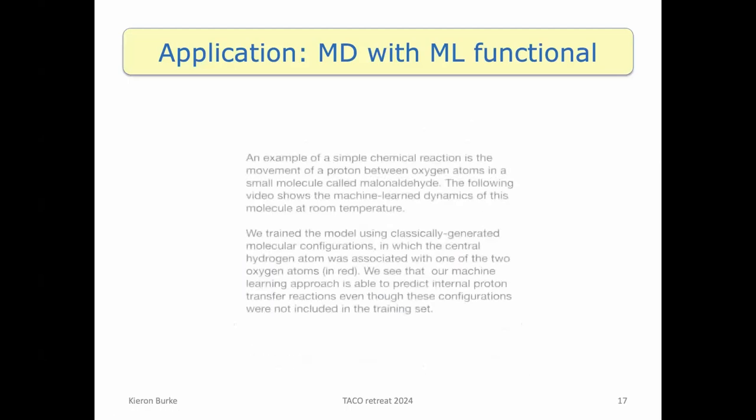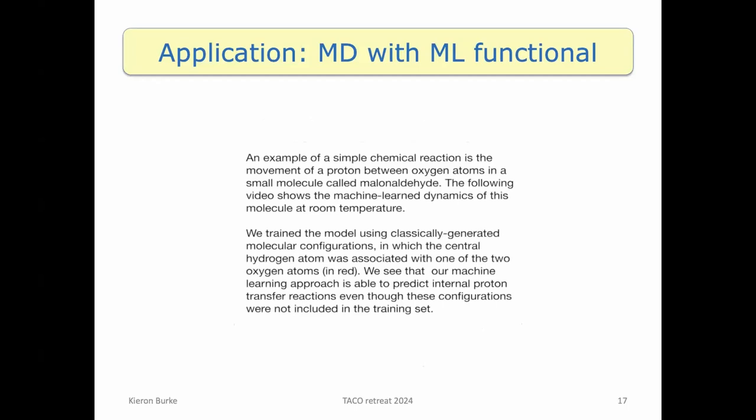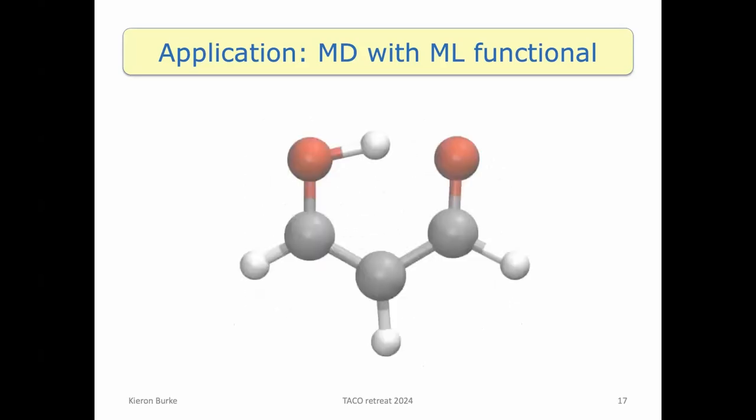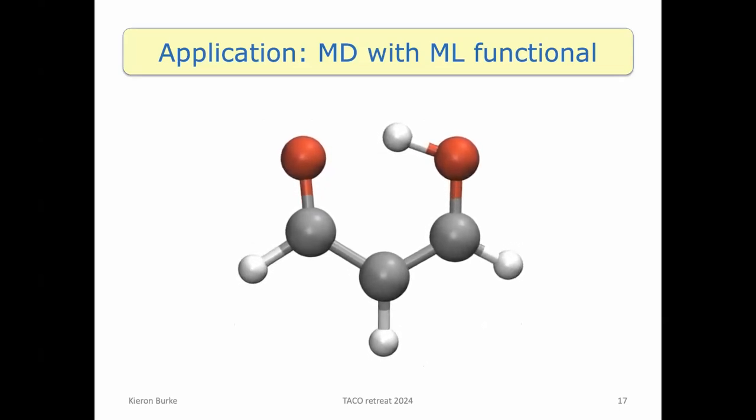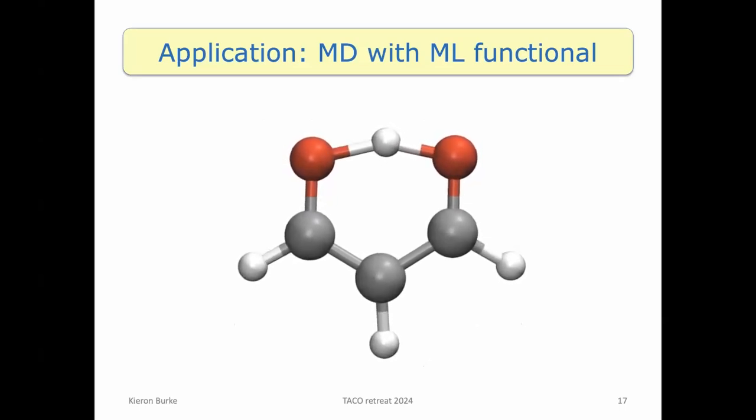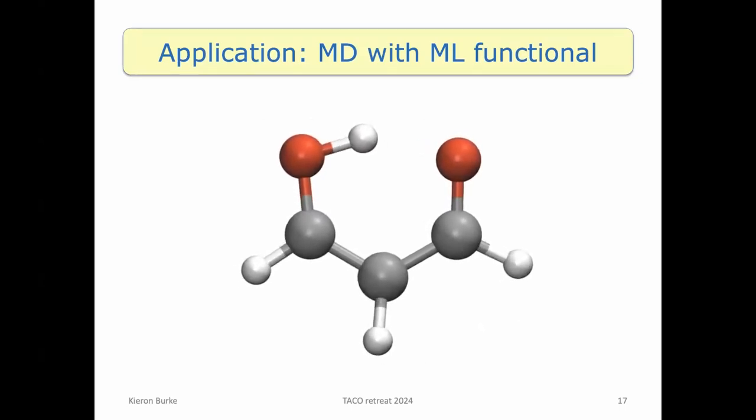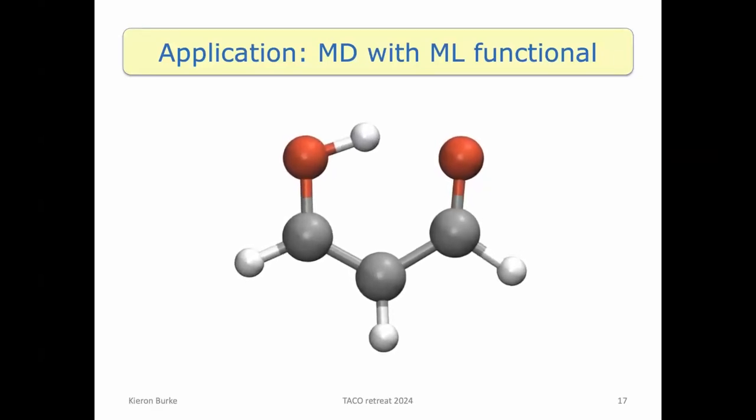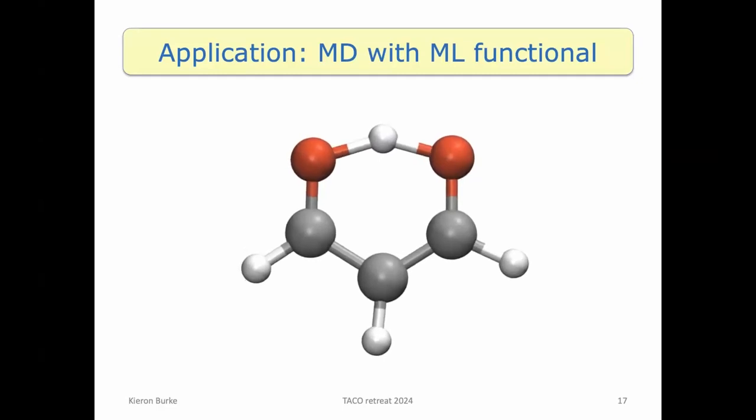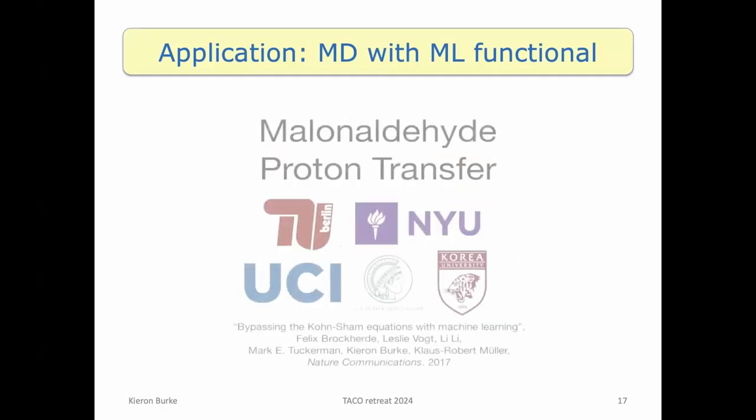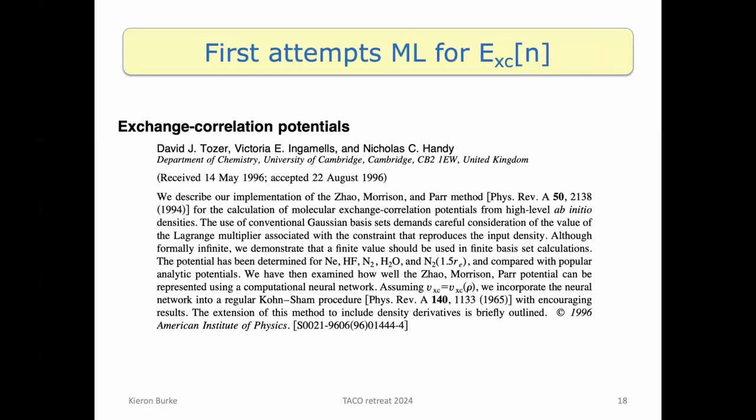Later we wanted to do better things, and so we did this with Mark Tuckerman's group at NYU. And what we did was we take the molecule and we had to sort of evolve the methods quite a bit. The original ones wouldn't work on something so complicated. So this is malonaldehyde, and we ran an MD simulation with that kinetic energy functional instead of solving the Kohn-Sham equations. And we saw this case of a proton transferring from one side to the other, which wasn't in the training set. So we had trained on about 2000 realizations of this molecule at about 600 kelvin, and then it could do this MD simulation with the machine learned functional.